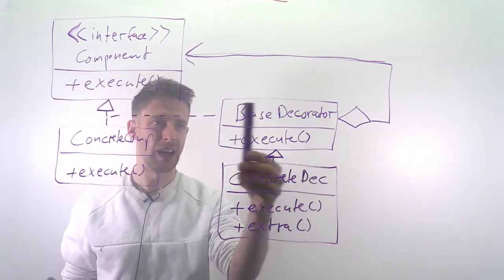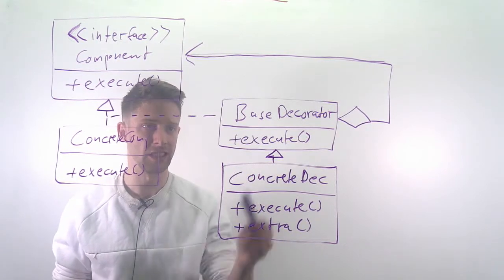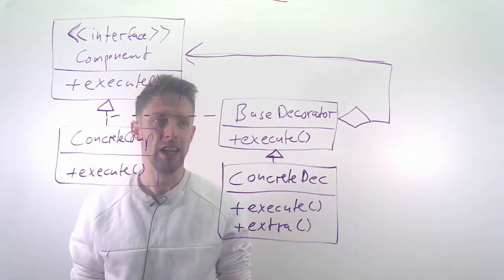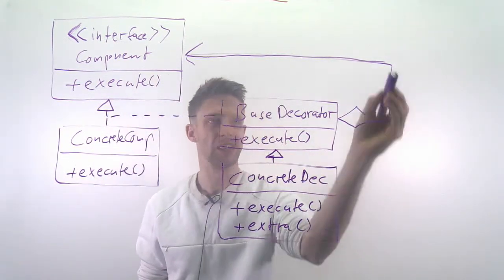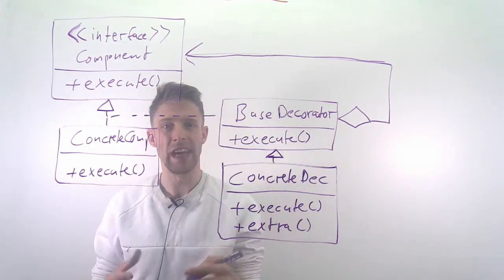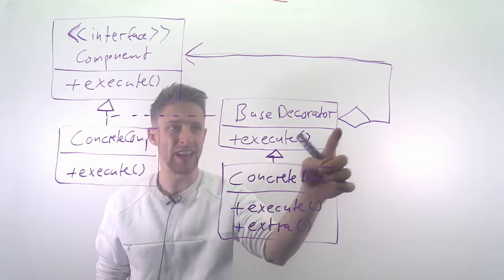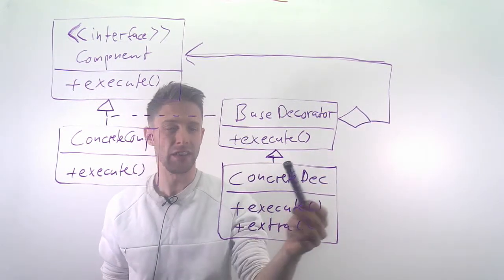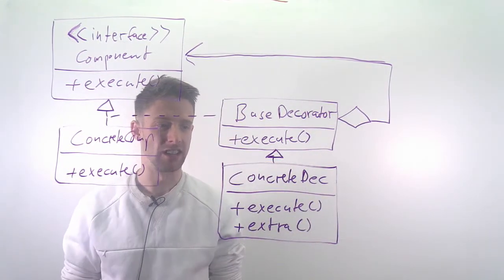Then we get into the decorator. We have a class that also realizes the component interface—that's our base decorator. So again, it has an execute method. But the big difference to a regular component is that it also has a reference to components. So basically, a base decorator has a number of components, it can keep track of them, and that way we can actually attach it to existing things.